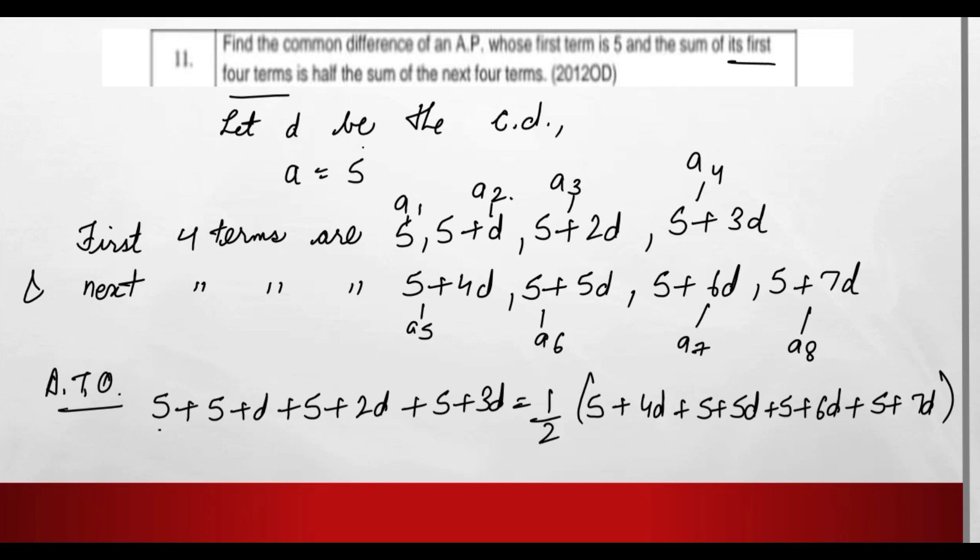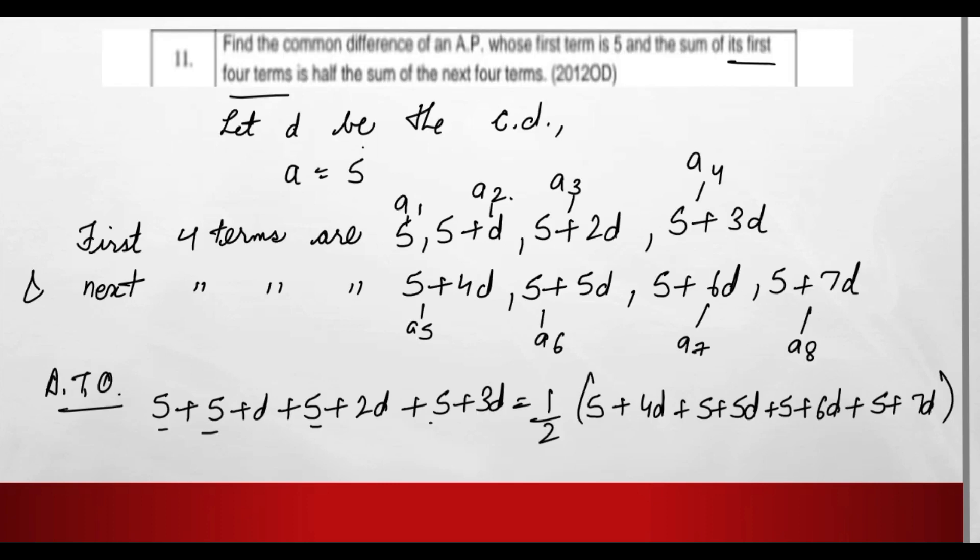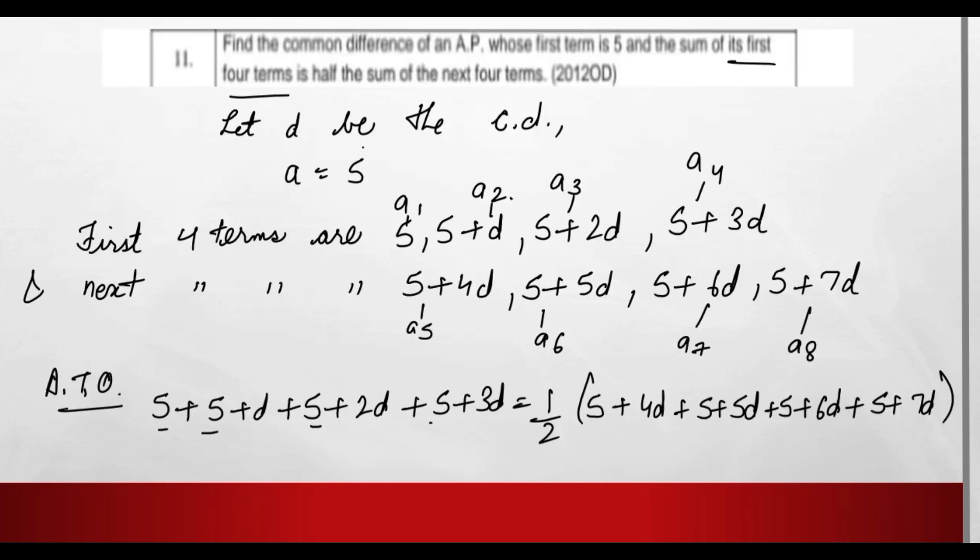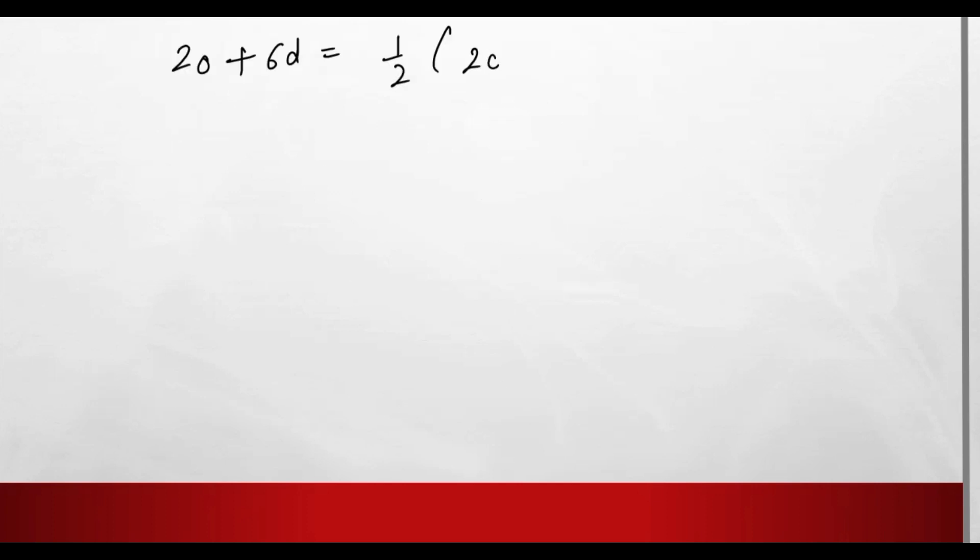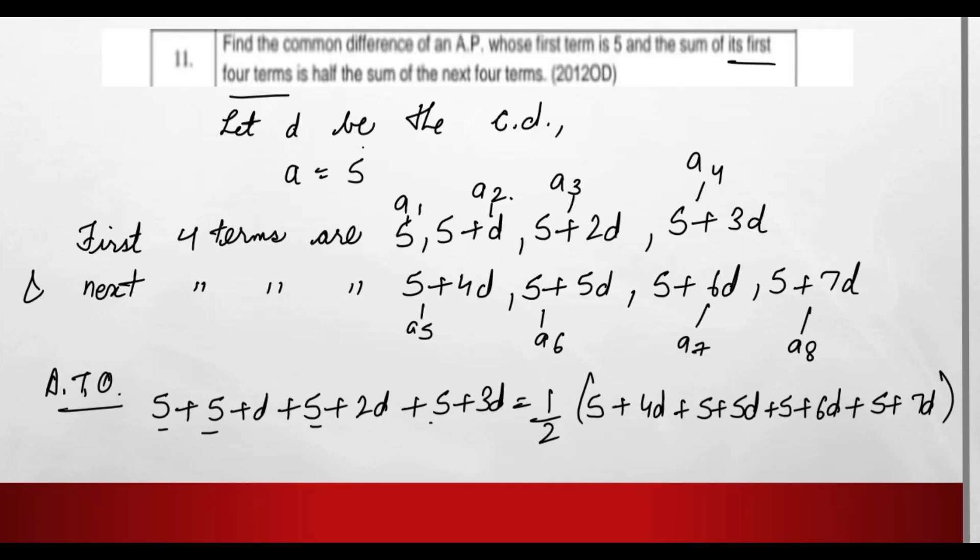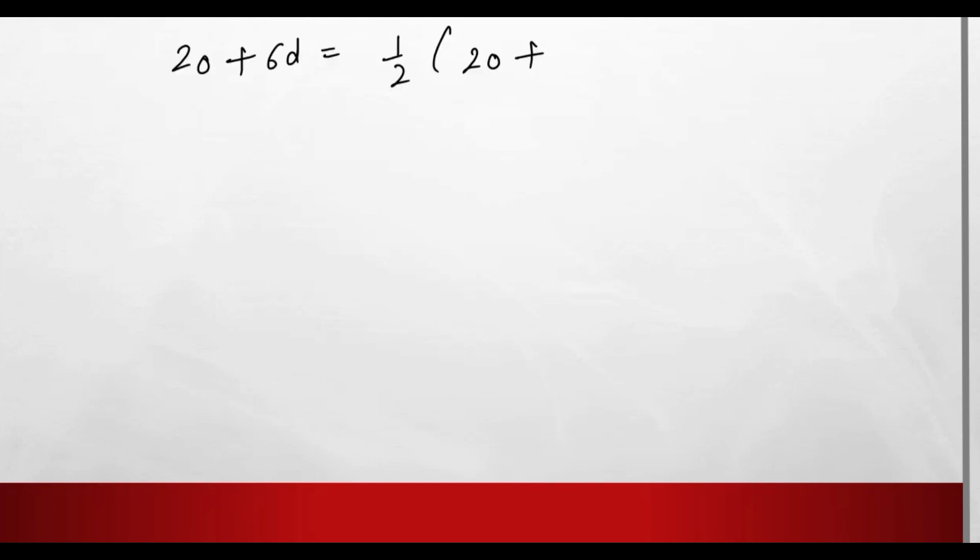20 + 6d, and this is equals to half. On the right side, 5+5+5+5 plus 4d+5d+6d+7d which is 22d.